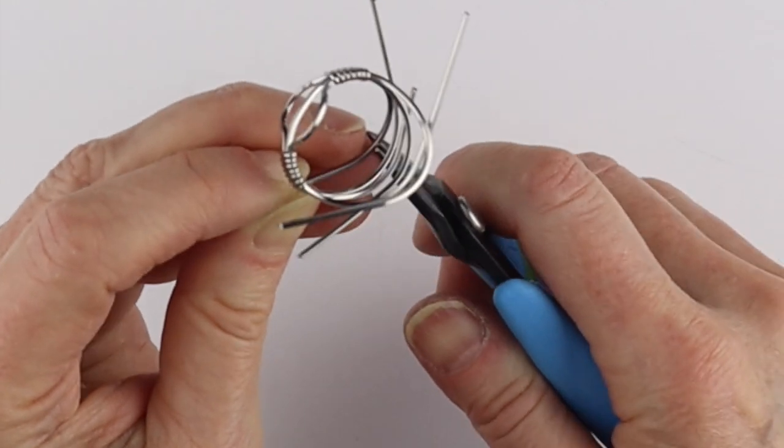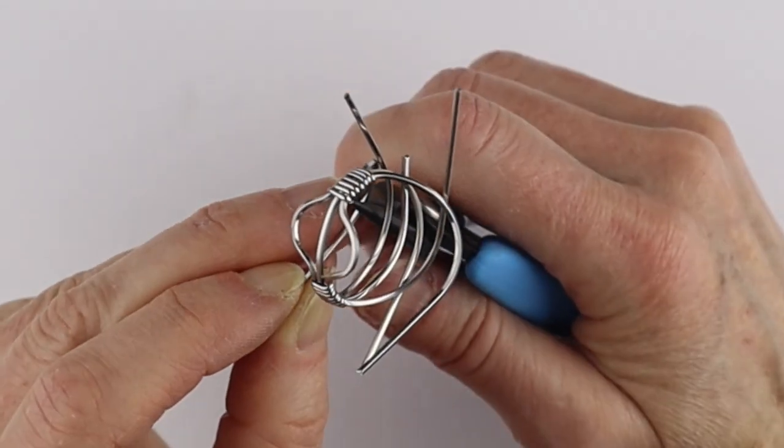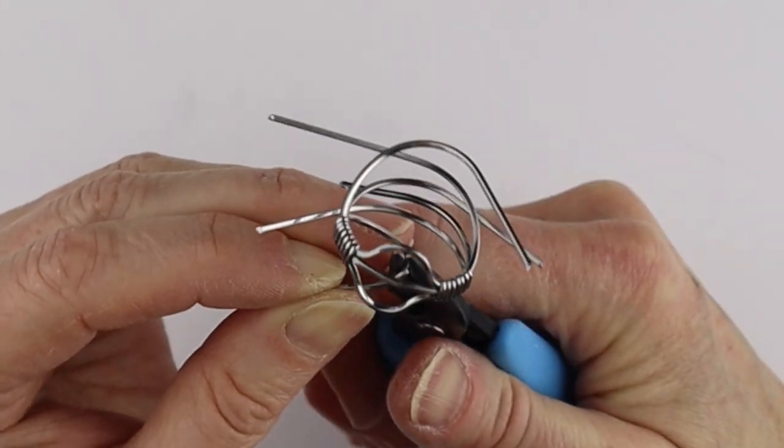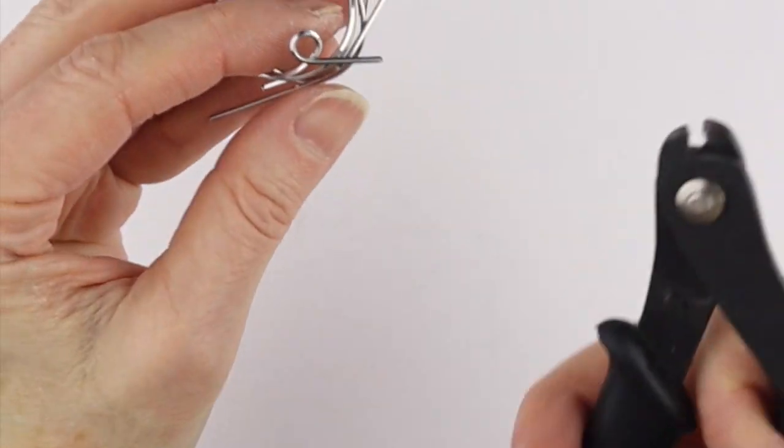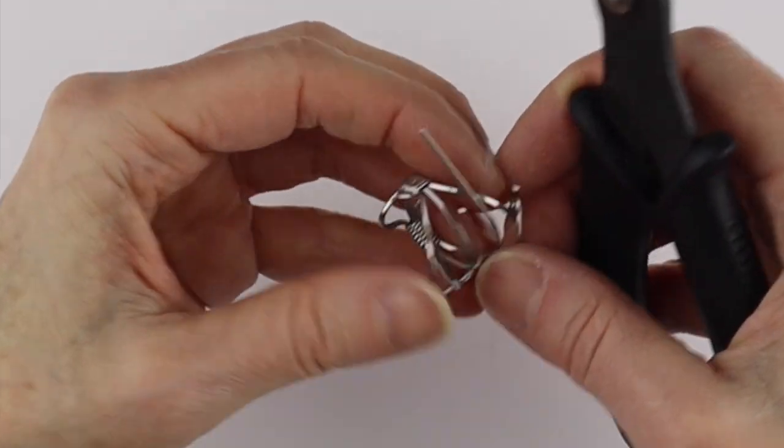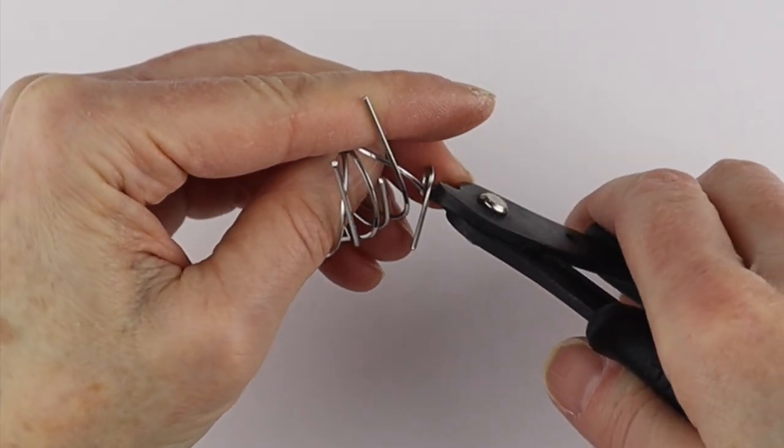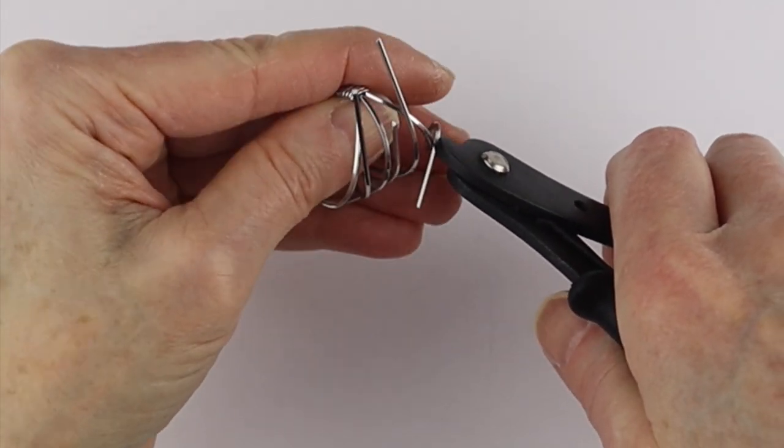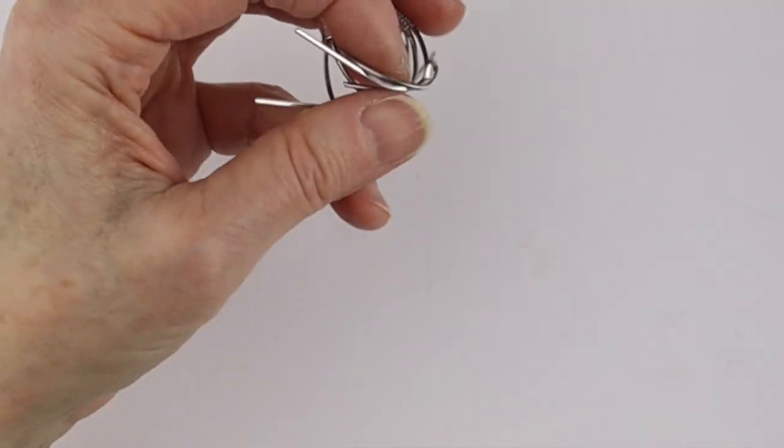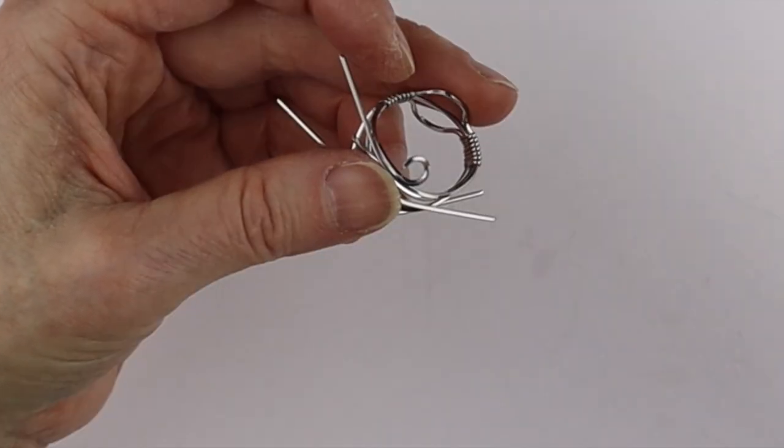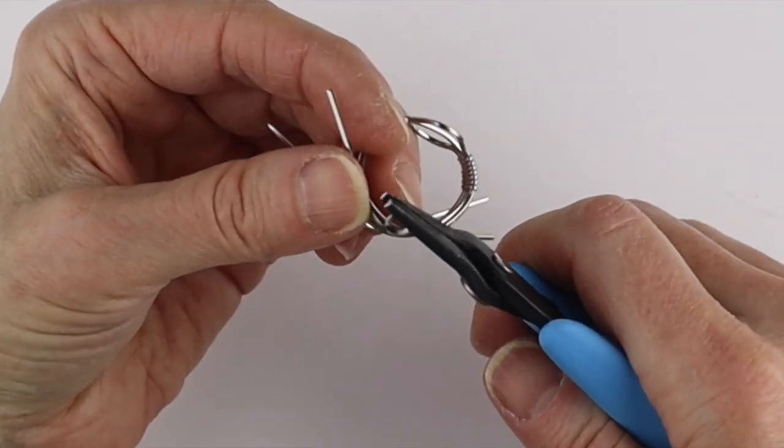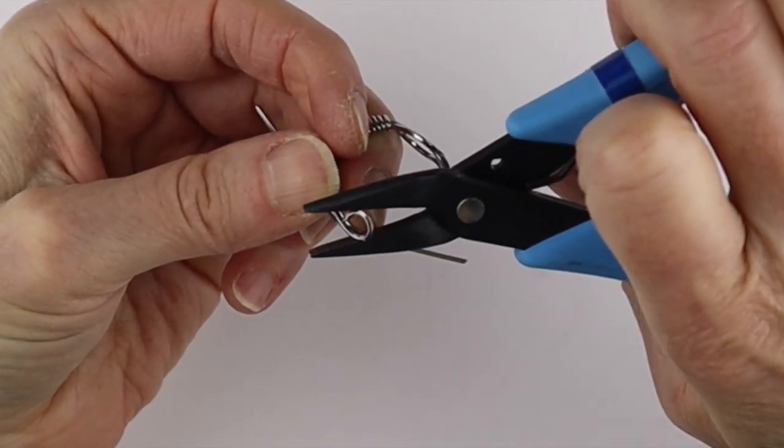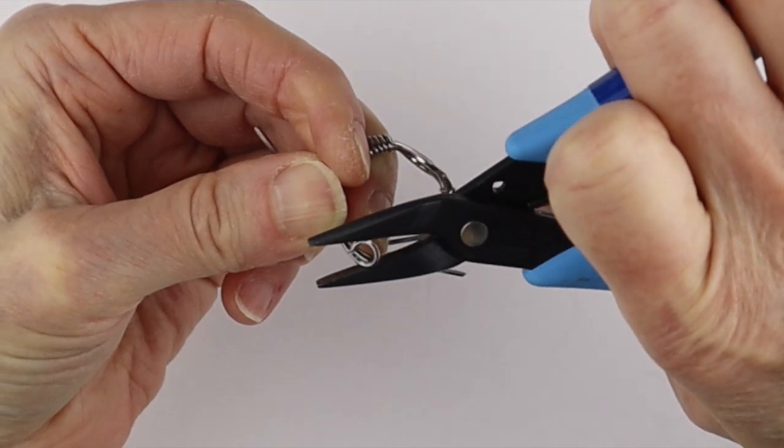From here we could find the center point. And we're just going to take our round pliers and bring it around. And then I'm going to get the memory wire cutters for this thicker wire. Make sure it's flush to where you want it. And clip it. Careful the ends don't go flying. And then you can take your flat pliers and just bring it in. And close it up.